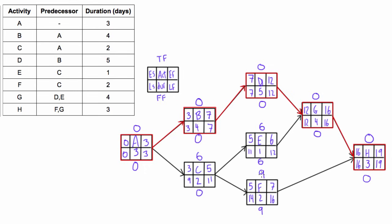Activity F has both a total float and a free float of 9, so the same kind of reasoning applies there. But activity C has a total float of 6, meaning you could delay it by up to 6 days without increasing the project duration. However, if you delayed C by even one day, you would affect the earliest start of at least one of its successors. For example, if you started C on day 4, you'd finish on day 6, meaning its successors couldn't start on day 5 — they'd have to start on day 6. That's why activity C has a free float of 0.